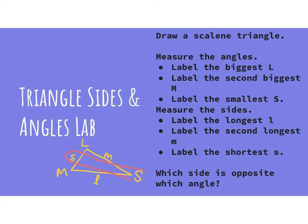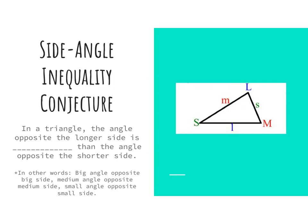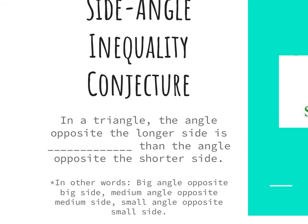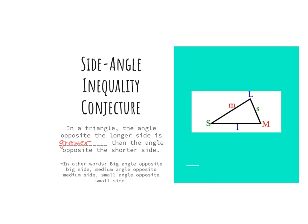So the smallest angle ended up across from the smallest side, the largest angle across from the largest side, etc. This is what the side angle inequality conjecture is. That in a triangle, the angle opposite the longer side is always greater than the angle opposite the shorter side. Big angles across from the big side, medium across from the medium side, small across from the small side.